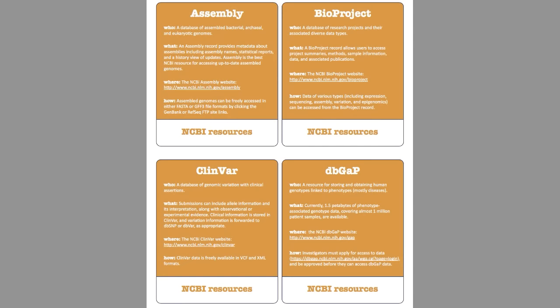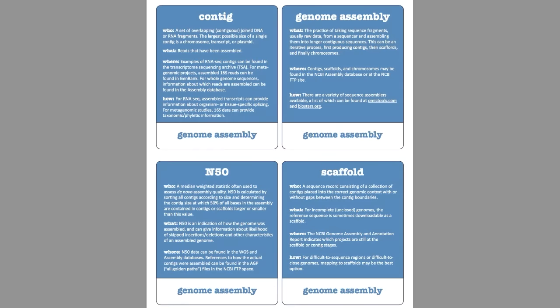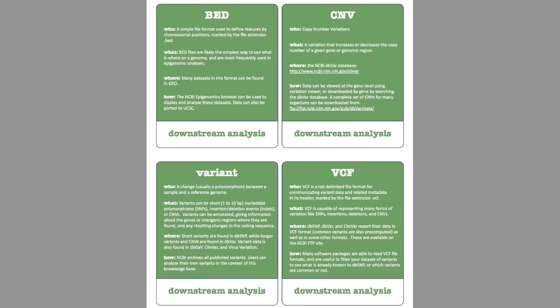NCBI databases that provide these data types to users will be covered in detail during this presentation. For a quick reference, you can go back to this glossary and look them up. We've also included some de novo sequencing terms, but those are beyond the scope of this course so we will skip them for today. Downstream analysis file formats are also quite important. The most important downstream analysis format, in my opinion, is the VCF — a tab-delimited file format for communicating variant data and related metadata.